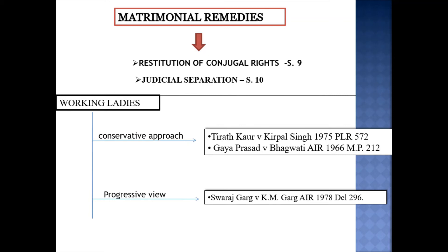The effect of restitution of conjugal rights is that the party who has withdrawn from the society must, within reasonable time, come back and start cohabiting together. Withdrawal from society has an element of desertion — a ground of divorce under Section 13 — but it is of lesser intensity. Withdrawal from society implies total repudiation of cohabitation: no contact, no talking terms — a total separation. Reasonable cause refers to any ground of matrimonial relief or any situation which makes it impossible to cohabit — a weighty and grave act or omission.